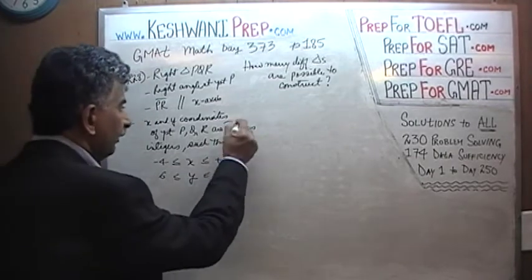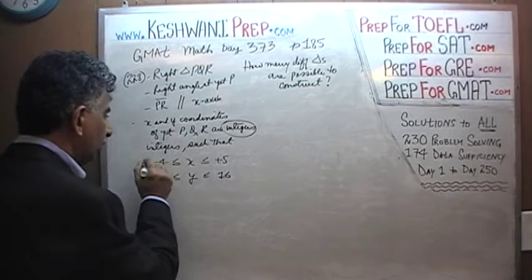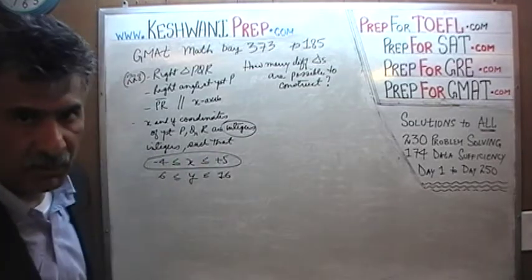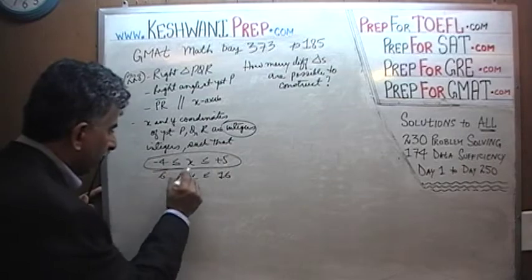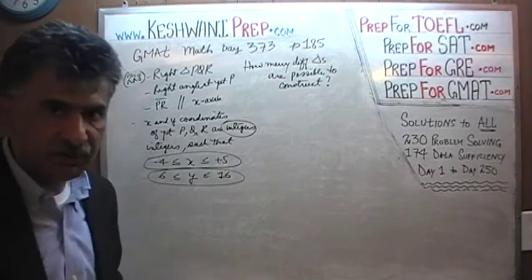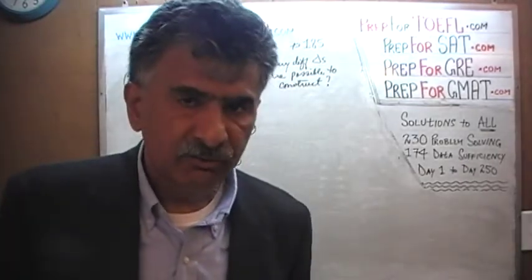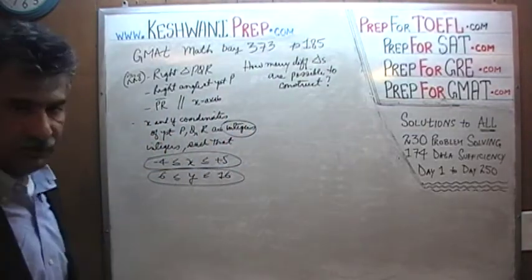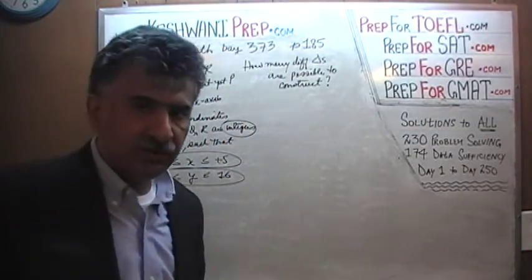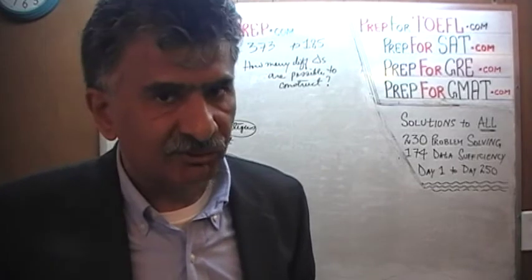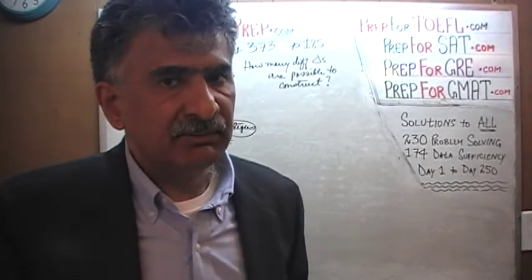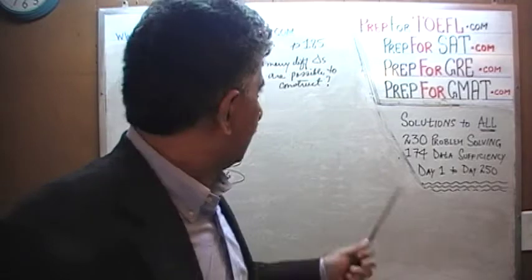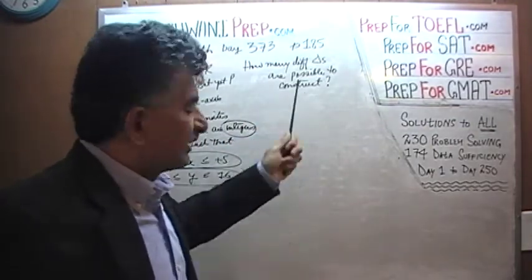Not only do they need to be integers, but the X-coordinate has to fall between negative four and positive five, and the Y-coordinate of any of these points P, Q, or R has to fall between six and sixteen. The question simply is: given these conditions and constraints, how many different possible triangles are there that one can construct?